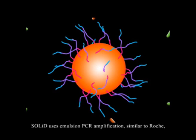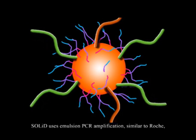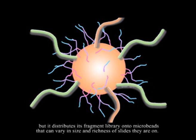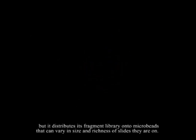SOLiD uses emulsion PCR amplification, similar to Roche, but it distributes its fragment library onto microbeads that can vary in size and richness of slides they are on.